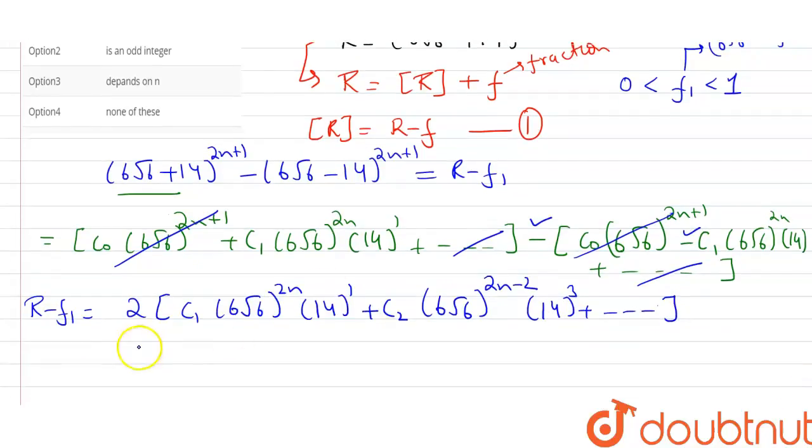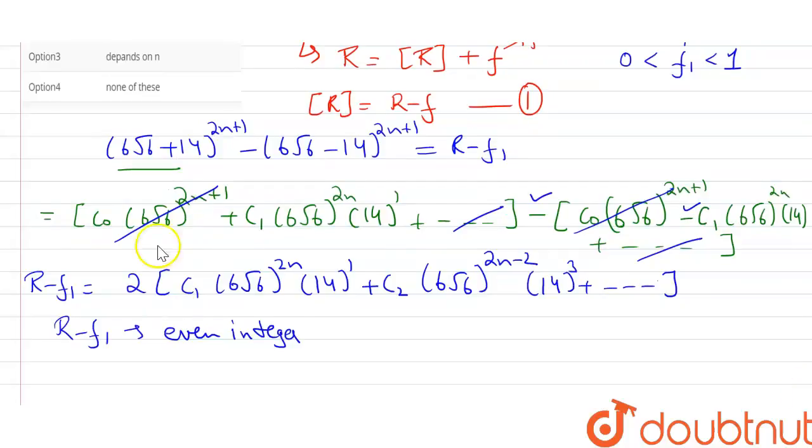This R - f₁ completely becomes an even integer. We can see that it is a completely even integer. And from here, R = even + f₁.